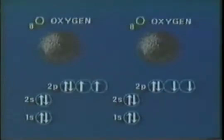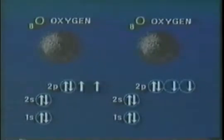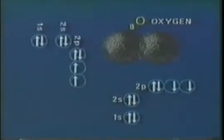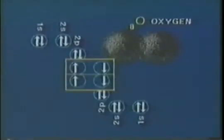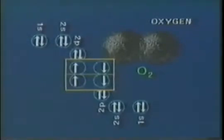Consider two oxygen atoms. We find that each atom must gain two electrons to acquire the electron configuration of neon. The oxygen atoms achieve this by sharing two pairs of electrons between them, producing a diatomic molecule of oxygen held together by a double covalent bond.